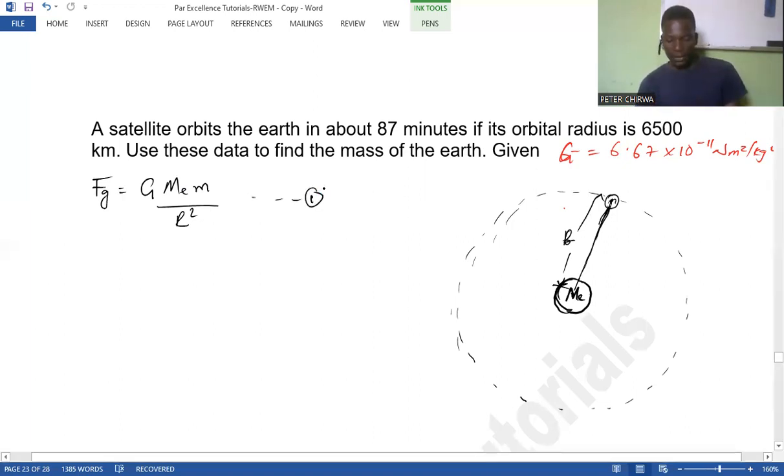According to Newton, this force of gravity is given by G and the mass of the Earth in this case, and the mass of the satellite divided by the square of the distance between them. That is according to this law of gravity. So let this be our equation one.